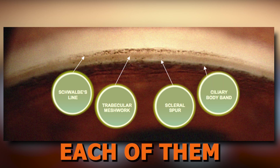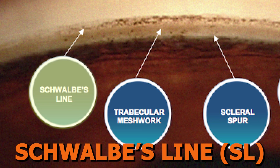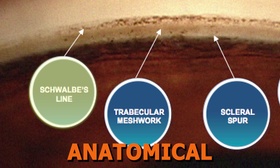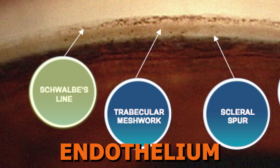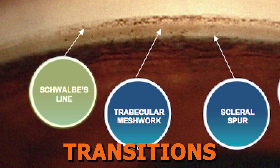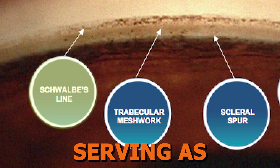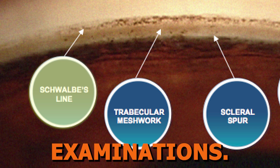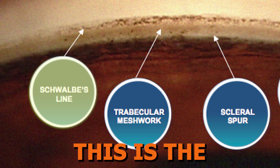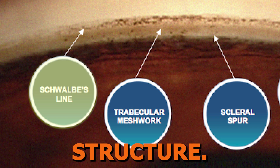Let's go over each of them briefly. Schwalbe's line is the anatomical boundary where the corneal endothelium transitions to the trabecular meshwork, serving as a landmark in gonioscopic examinations. This is the most anterior visible structure.